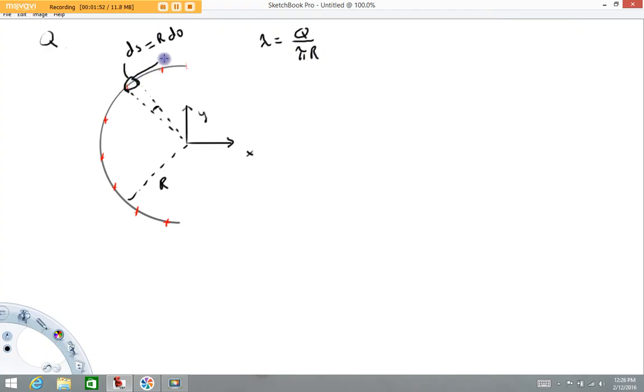This charge now has a charge on it that I'm going to call DQ. It's going to equal the charge density Q over pi R times the length of that element, which is R D theta. The R's cancel, so DQ equals Q over pi D theta.